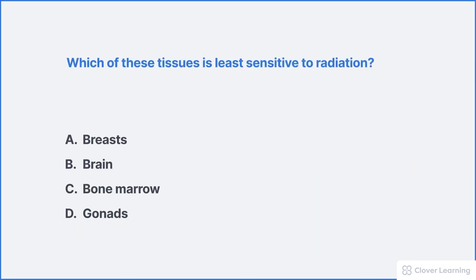Which of these tissues is least sensitive to radiation? The correct answer is the brain. The brain is composed of nerve tissue, and nerve tissue is not very radiosensitive at all. These cells are mature, highly specialized, and not very active in reproduction. As a result, the brain and all nerve tissue is not very radiosensitive.